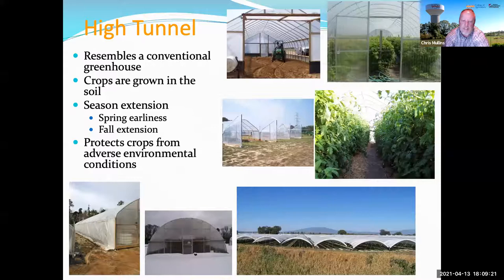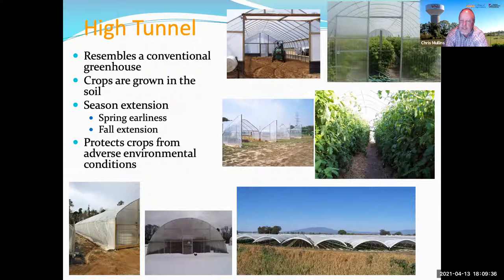The multi-bay field-scale structure in the bottom picture is more for main-season production — we don't see that as much in Virginia and Kentucky. The other pictures are more typical single-bay structures used for season extension.